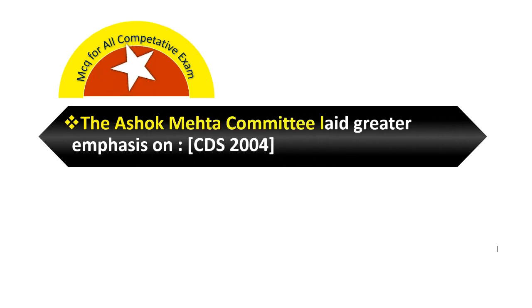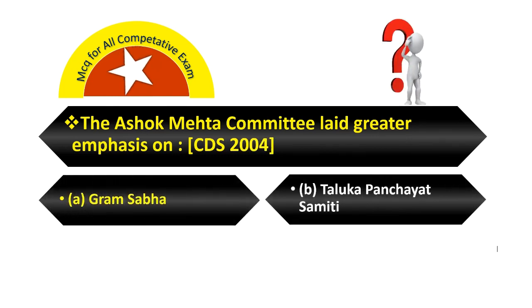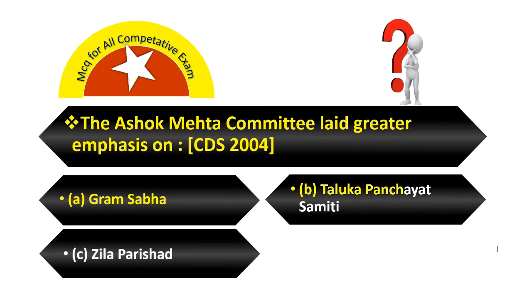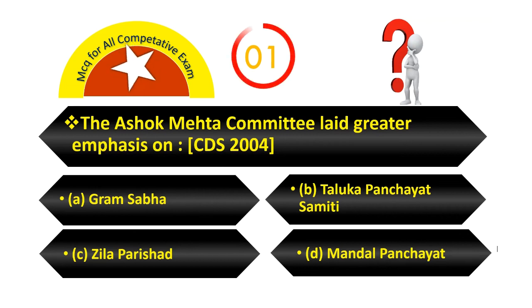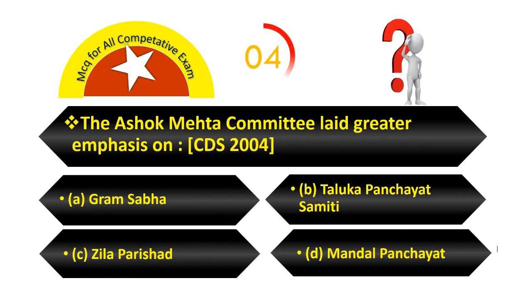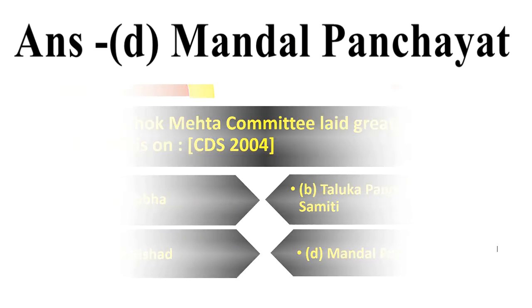The Ashok Mehta Committee laid greater emphasis on: Option A, Gram Sabha. Option B, Taluka Panchayat Samiti. Option C, Zila Parishad. Option D, Mandal Panchayat. Your answer is Mandal Panchayat. Option C, Zila Parishad.